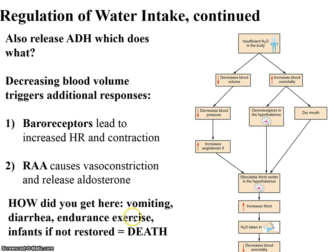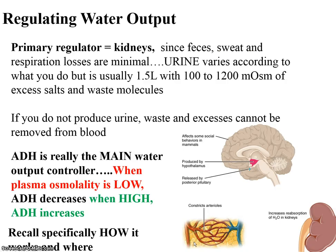How did you get to this point of imbalance? Vomiting, diarrhea, endurance exercise, and infants. And again, if this is not restored, people can die from this. The output is primarily the kidneys — what we just finished covering in the last chapter. Since feces, sweat, and respiration losses are minimal, urine varies according to what you do — somewhere around one to two liters a day. The concentration of urine has a vast range, because this is waste material.